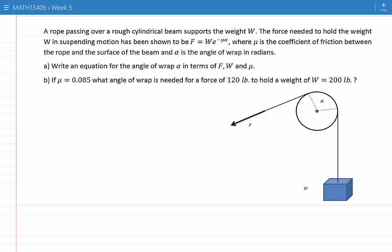A rope passing over a rough cylindrical beam supports the weight W. The force needed to hold the weight W in suspending motion has been shown to be F equals W e to the power of minus mu alpha, where mu is the coefficient of friction between the rope and the surface of the beam and alpha is the angle of wrap in radians.